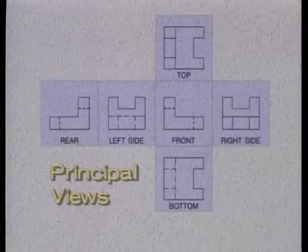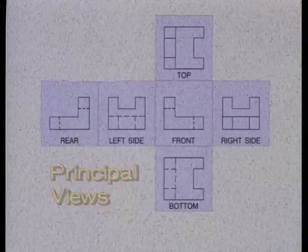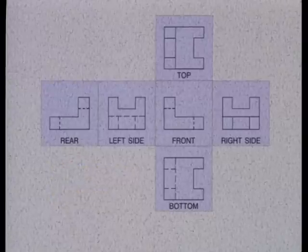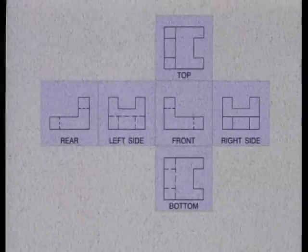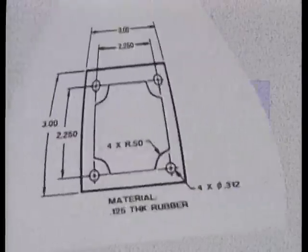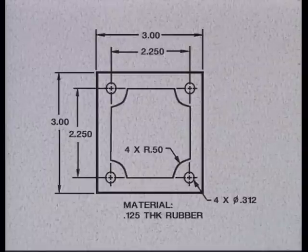Getting back to the principal views, the number included on the drawing depends on the shape and complexity of the part. Most drawings include two or three principal views, usually the front, top, and right side. However, a simple part, such as this gasket, requires only one view to define its shape and size, along with a note specifying its thickness.